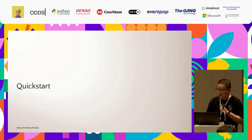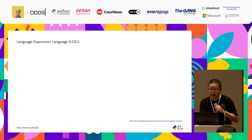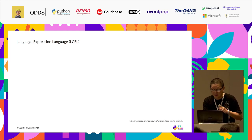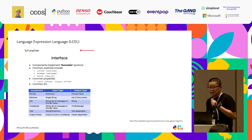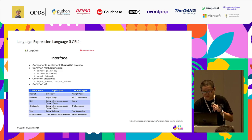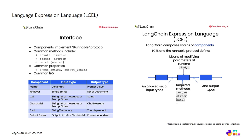Now let's take a quick start on how to use LangChain. Recently, LangChain introduced LangChain Expression Language, or LCEL. It's a declarative way to easily compose chains or sequences of calls together. All components now implement the Runnable protocol. There are common methods, common properties, and common input and output. With LCEL and the Runnable protocol, for each component we can define input and output types, modify parameters at runtime, and execute methods in either sync or async mode. The composition can use the pipe syntax.